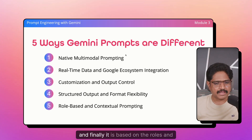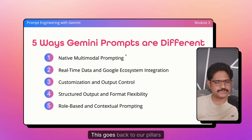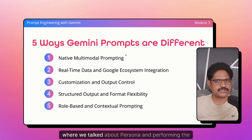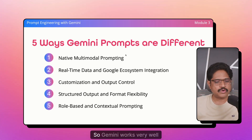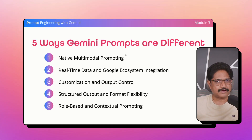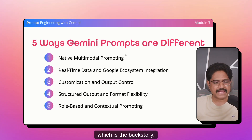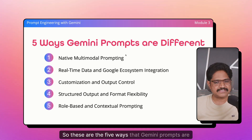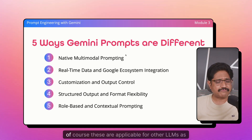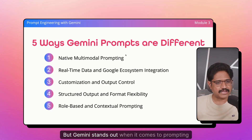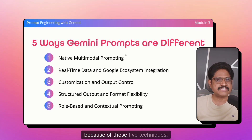Finally, it is based on roles and contextual prompting. This goes back to our pillars where we talked about persona and performing contextual prompting. Gemini works very well when you have a role-based prompt combined with contextual content, which is the backstory. These are the five ways Gemini prompts are different. These are applicable for other LLMs as well, but Gemini stands out when it comes to prompting because of these five techniques.